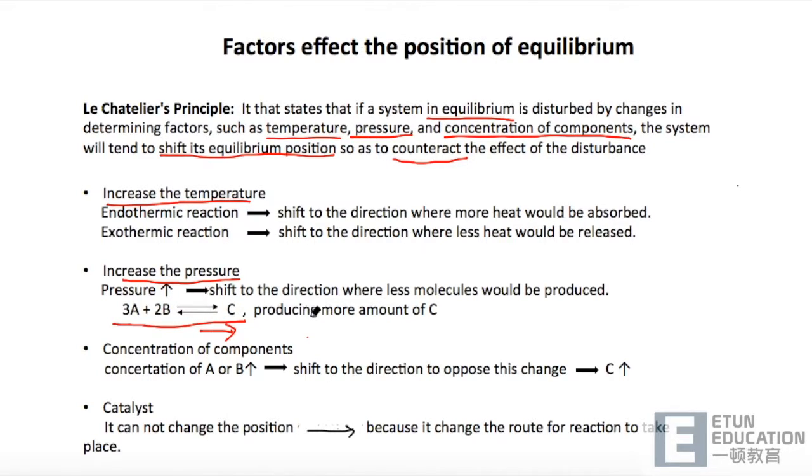所以就会 producing more amount of C component. 相反,当 pressure decrease 的话,相当于我们可以想象成这个一定体积下它的原子的距离增加了。这样子的话,我的 equilibrium 想再次平衡,就必须往 increase the number of atoms 的那个方向去反应。这样子的话,我的 equilibrium position 就会 shift to the left,这样子去 produce more atoms or molecules, in order to counteract the effect of decreasing the pressure.